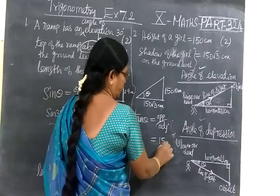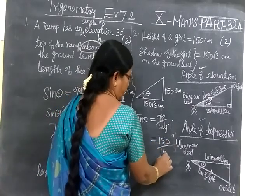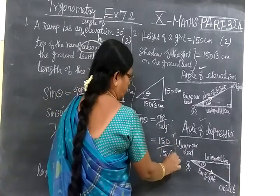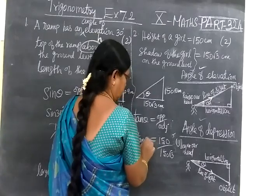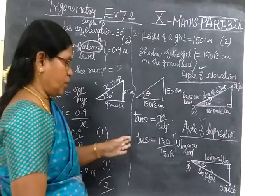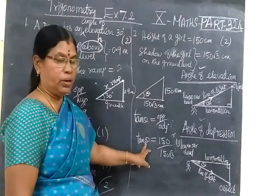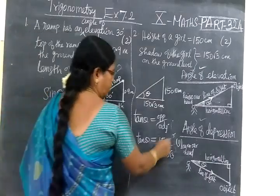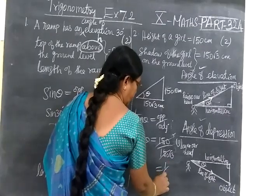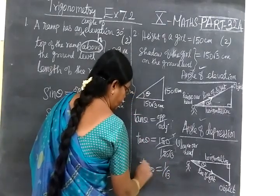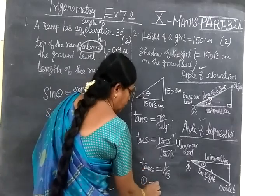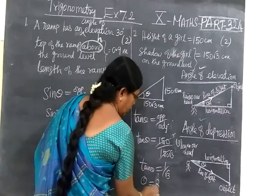So equal to 150 by 150 root 3. Here we write tan - theta only. Sorry, tan theta. Theta only we want to find. So cancel this and write 1 by root 3. Which implies theta equals 30 degrees.